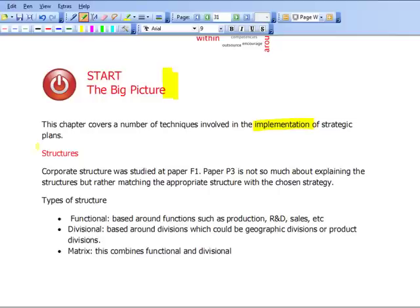To start with, we're going to look at structures at the bottom of page 31. This is assumed knowledge from your earlier studies - from paper F1. Some of you may have studied it under the old syllabus paper 1.3, but the concepts are the same. We're talking about corporate structures.